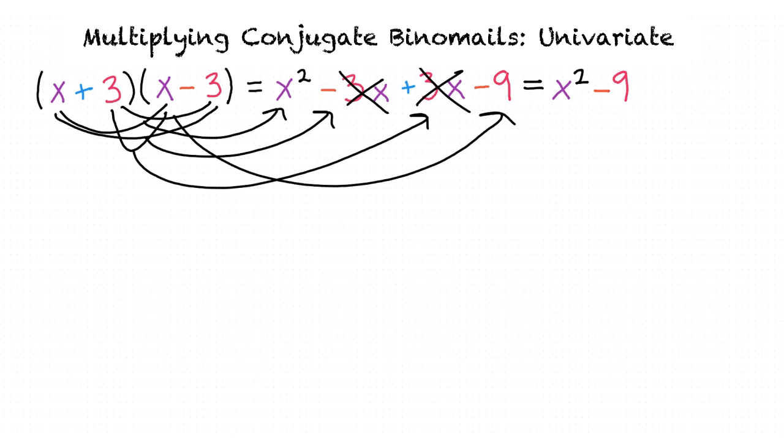Here are some other examples of conjugate binomials. We have x minus 2 and x plus 2, same first term of x, opposite second terms of minus 2 and plus 2. Another example is y plus 3x and y minus 3x, same first term of y and opposite second terms of 3x and minus 3x.